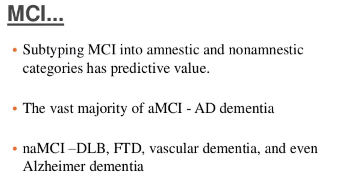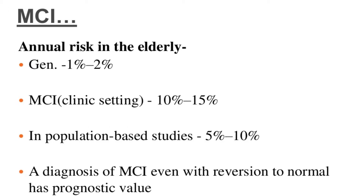Subtyping MCI into amnestic and non-amnestic categories has a predictive value. The vast majority of amnestic MCI is mainly because of Alzheimer's dementia, while non-amnestic MCI is mainly due to other diseases such as vascular dementia, Lewy body disease, or Alzheimer's dementia. The annual risk of progression in the elderly is 1–2% in the general population, 10–15% in clinical settings, and 5–10% in population-based studies. A diagnosis of MCI, even with reversion to normal, has prognostic value.